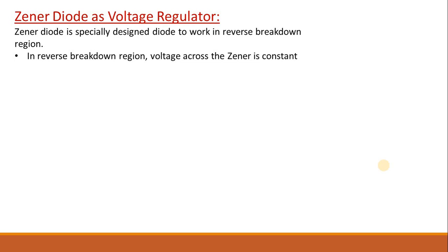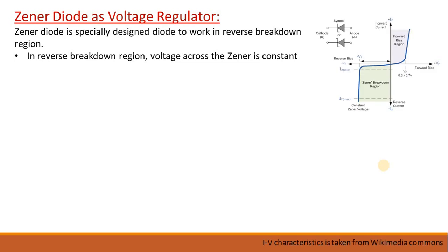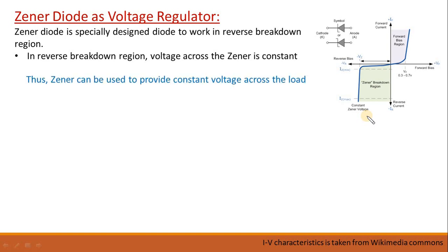A Zener diode is a specially designed diode that works in the reverse breakdown region. If you bias a diode with reverse bias and increase the biasing voltage, then after a critical limit there is a breakdown. From the IV characteristics you can see where the breakdown is. From this curve it is easily seen that at the point of breakdown the Zener voltage is constant and current is increasing very fast. This means the Zener can provide a constant voltage.